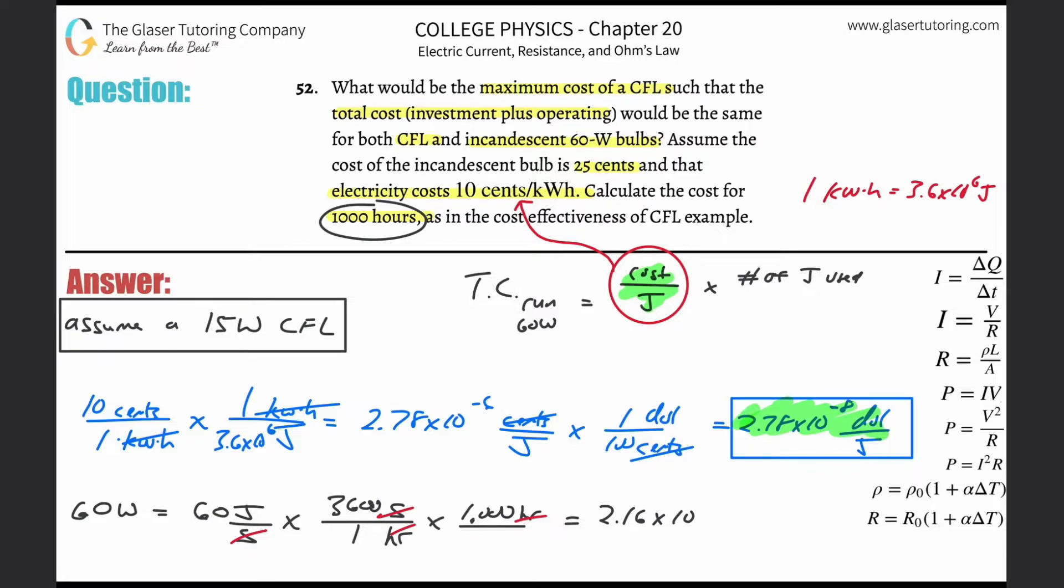And this is going to come up to be 2.16 times 10 to the, bear with me since it didn't convert it into scientific, one, two, three, four, five, six, seven, eight. This is 2.16 times 10 to the eighth, and this now is joules. This is now the number of joules over the thousand hours. So basically now what I found is this represents the total number of joules that have been utilized over the thousand hours.